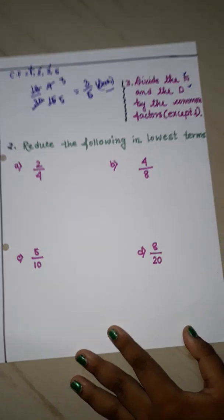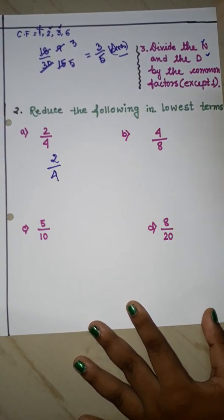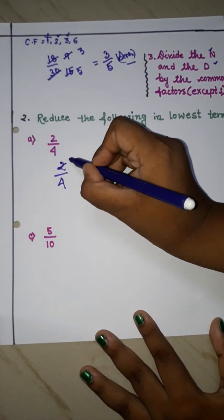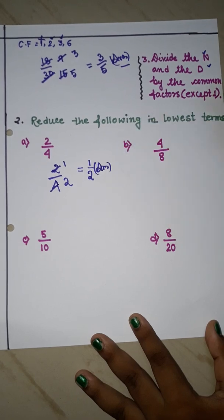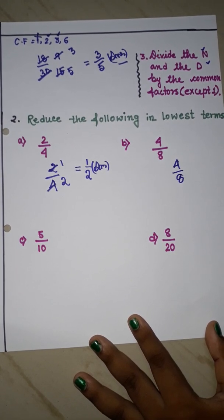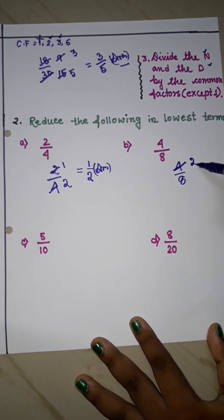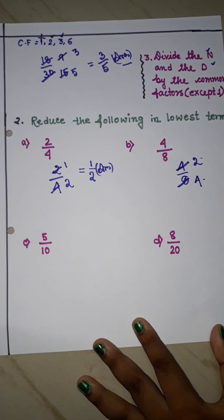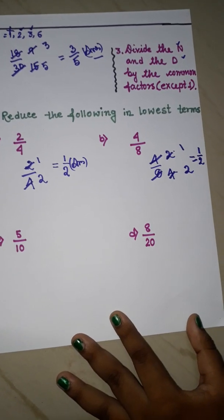Next, reduce the following to the lowest term. For 2/4: by 2 we divide both — 2÷2=1, 4÷2=2, so the answer is 1/2. For 4/8: divide by 2 to get 2/4, then divide by 2 again to get 1/2. For 5/10: divide by 5 — 5÷5=1, 10÷5=2 — so the answer is 1/2. All three answers come to 1/2.